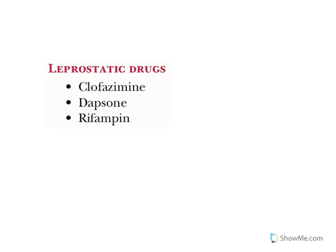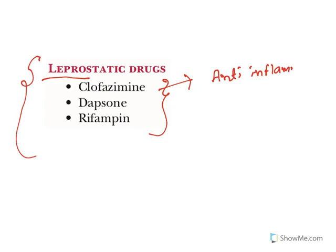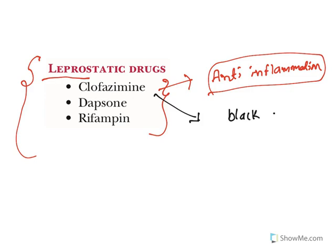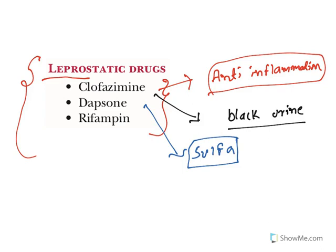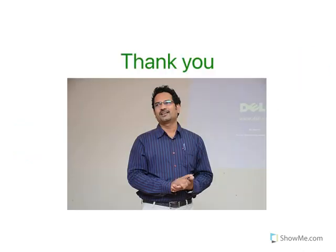Mycobacterium leprae causes leprosy and is treated with clofazimine, dapsone, and rifampin. Clofazimine is an anti-inflammatory drug that controls the inflammation that destroys tissue in leprosy, but it causes black coloration of urine. Rifampin gives orange coloration to secretions. Dapsone is a sulfa drug and an antimetabolite that inhibits folic acid synthesis in the organism. Rifampin inhibits DNA-dependent RNA polymerase, preventing new DNA formation.